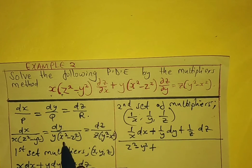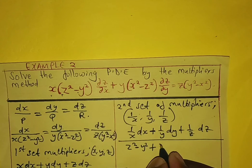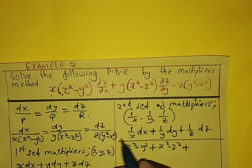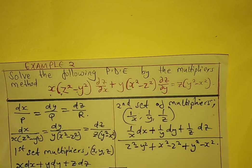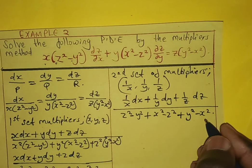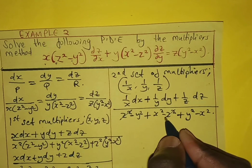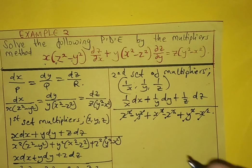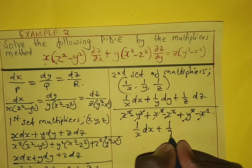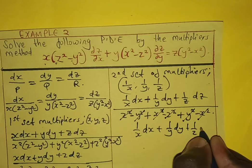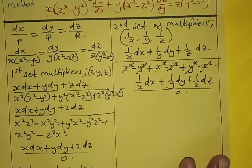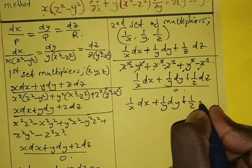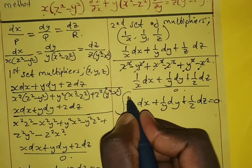Continuing the denominator: plus 1/y times y(x² minus z²) gives x² minus z², plus 1/z times z(y² minus x²) gives y² minus x². When we add: z² minus z² is 0, negative y² plus y² is 0, x² minus x² is 0. So we have 1/x dx plus 1/y dy plus 1/z dz over zero, meaning 1/x dx plus 1/y dy plus 1/z dz equals zero. We integrate this equation.